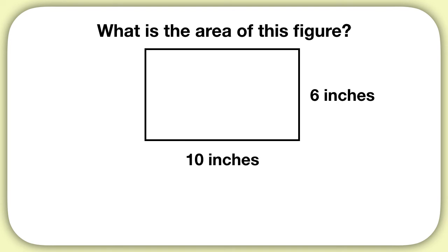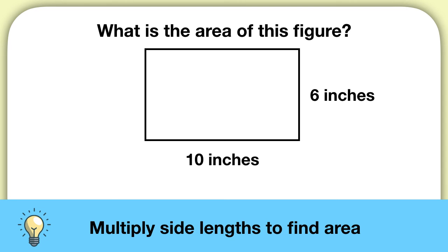Well, how can we find the area of a rectangle? Remember, you can multiply side lengths to find the area of a rectangle. Here, we can just multiply 10 times six. So what is the area of this rectangle? The area will be 60 square inches.